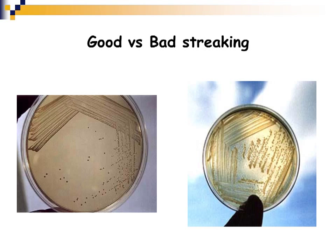This slide shows the difference between good and bad streaking. On the left, a nice streaking method shows the first quadrant with concentrated organisms, the second with many organisms but no isolation, the third beginning to show isolated colonies, and the fourth with very nice isolation. On the right, all quadrants are mixed together with no good isolation. Your goal with streaking is to achieve nicely isolated colonies by the third or fourth quadrant.